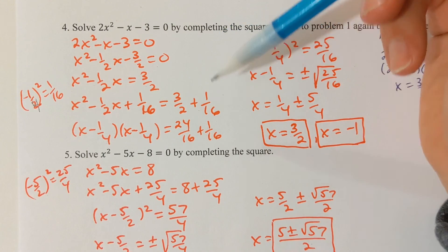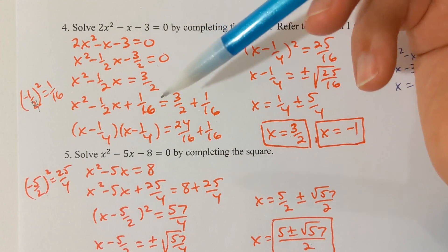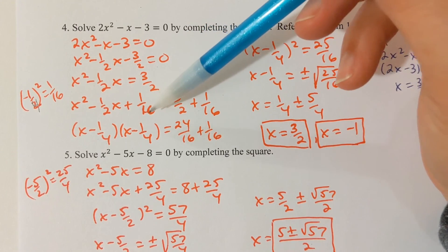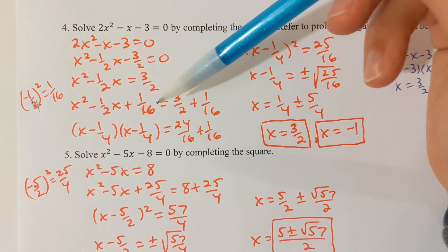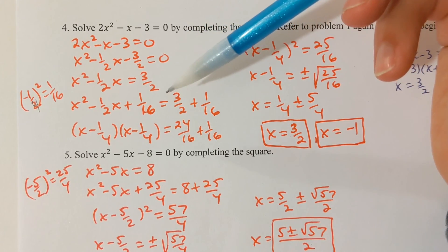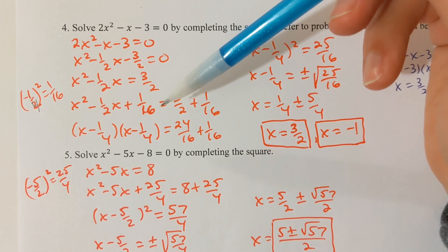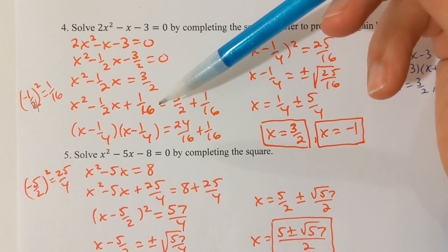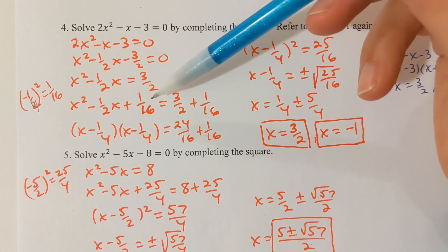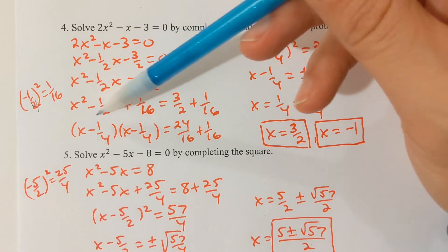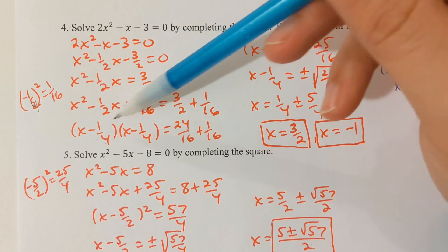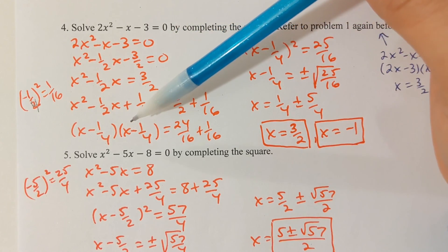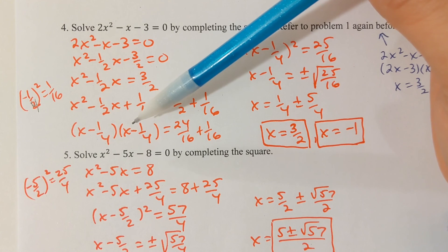Be sure that you add that number to both sides — I'll have students sometimes mess this up and they've only got it added to one side. Don't do that. The reason for doing that — because this seems like a strange thing to do — is because the left side will always factor, and the factors will always be the same.